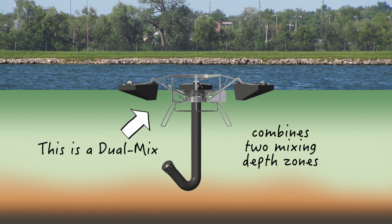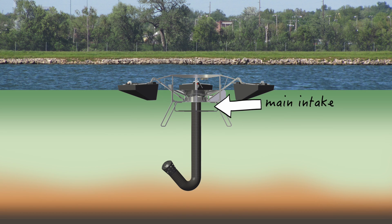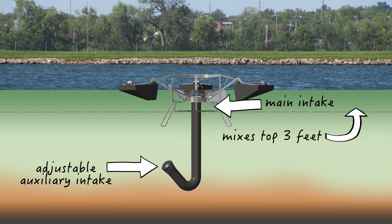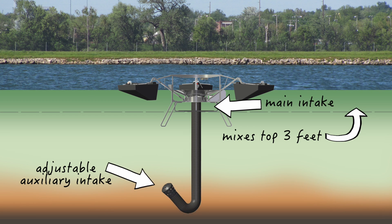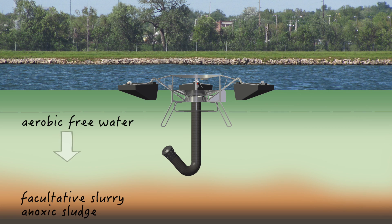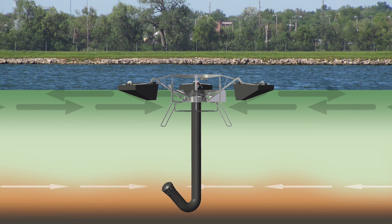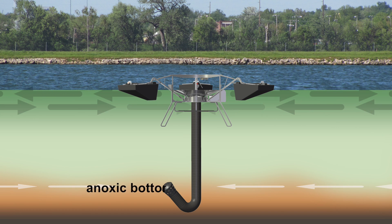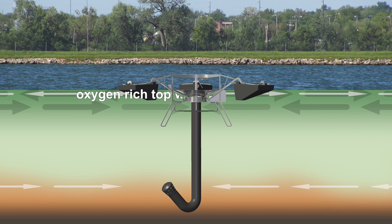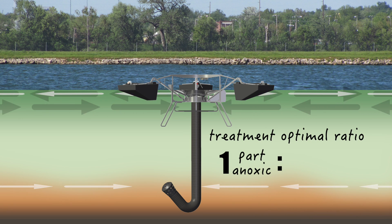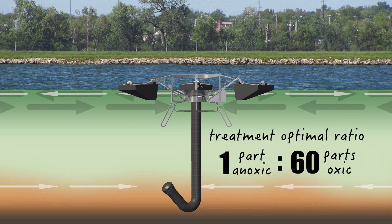There is another mixing option called a dual mix, which creates a combined mix from two different depth zones in the lagoon. The dual mix main intake is always set three feet from the surface, with an adjustable auxiliary intake hose that can be placed anywhere in the water column. By placing the auxiliary intake deeper in the water toward the sludge and slurry layers, it will slowly pull in anoxic bottom water and combine it with oxygen-rich top water at a treatment-optimal ratio of one part anoxic water to 60 parts fully oxic water.